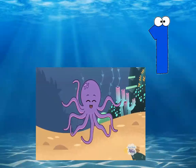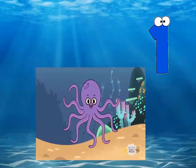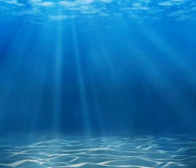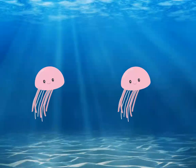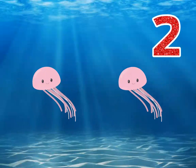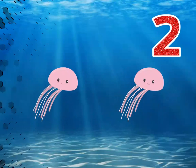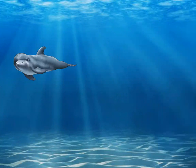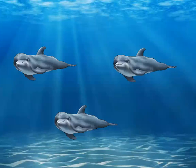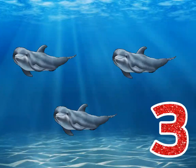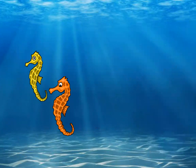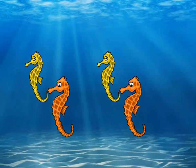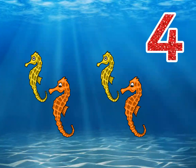How many octopus do you see here? Very good — one octopus. How many jellyfish do you see here? One, two jellyfish. Very good, that's number two. How many dolphins do you see? Let's count: one, two, three — that's number three. How many seahorses do you see here? One, two, three, four — very good, four seahorses.